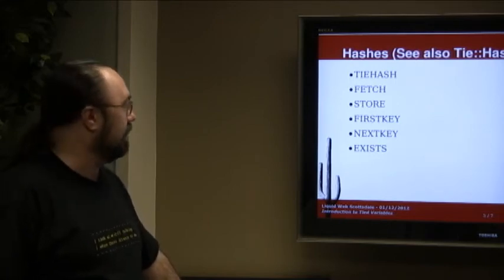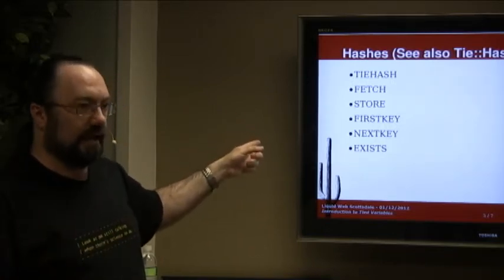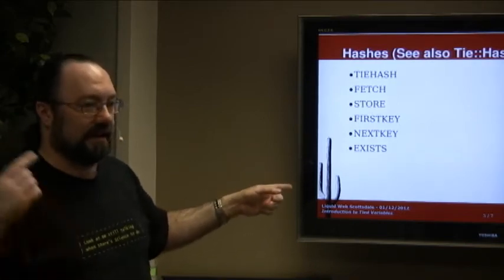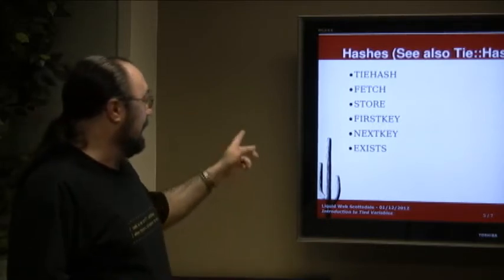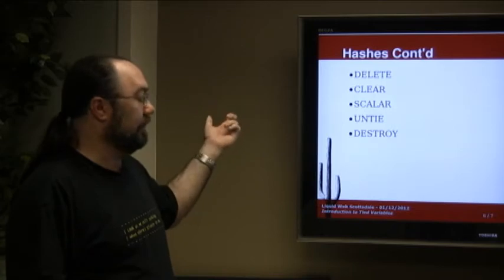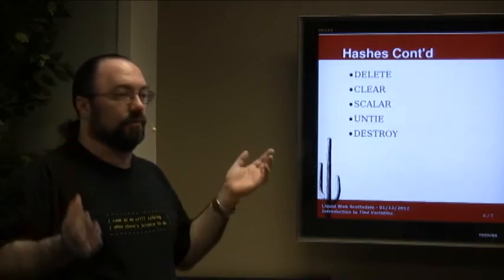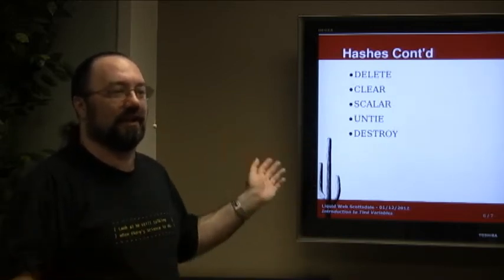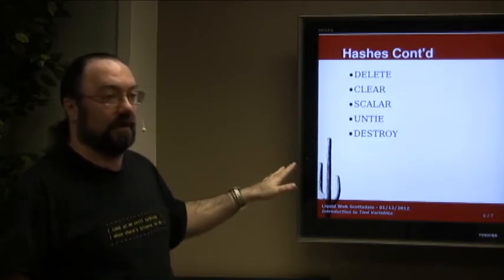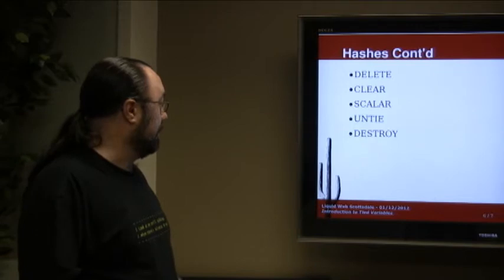Hashes. See also tie hash for the ugly details. So you've got tie hash, you've got fetch store first key, which will give you the very first key if you're calling like keys on your tied array. And then next key is what gets called every subsequent time after that saying give me the next key, next key, next key until there are no more keys. And then you've got exists to test whether or not an actual key exists in the hash. Delete clear again, clear out the whole thing. Scalar is what you do in scalar context. Whatever you want your hash to do could be completely different in scalar context. Maybe you want to return a count or something, then you can certainly do that. Untie, destroy, nothing too surprising there.